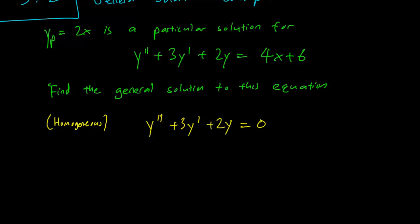This seems like a question that we've solved before. So we take y equals e^(rx), and we have y prime equals r·e^(rx), y double prime equals r²·e^(rx). So what we end up with is r²·e^(rx) plus 3r·e^(rx) plus 2·e^(rx) equals 0.